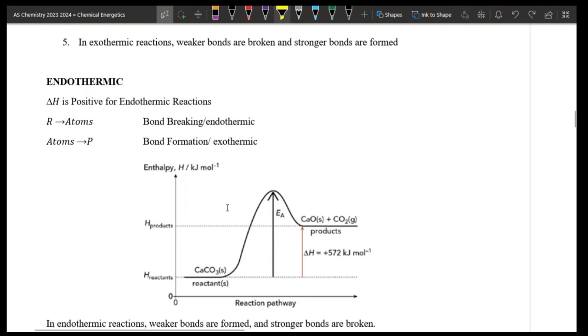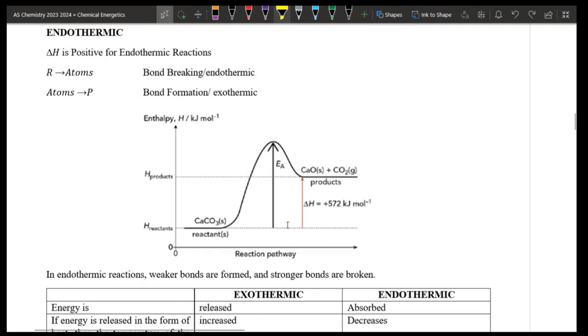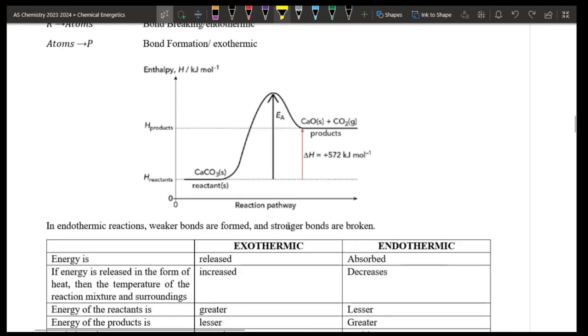Exothermic and endothermic are basic differences in one table and we will summarize it. In exothermic energy is released and endothermic energy is absorbed. If energy is released in the form of heat, then the temperature of the reaction mixture in the surroundings will increase in exothermic and endothermic will decrease. Energy of reactants in exothermic it is greater, in endothermic it is lesser. In exothermic the energy of products is lesser and the energy of products is greater in endothermic.